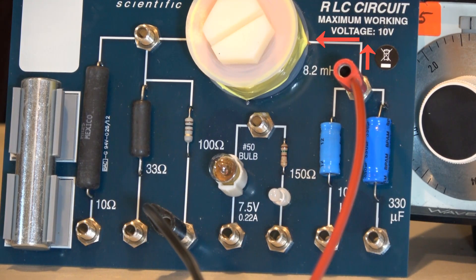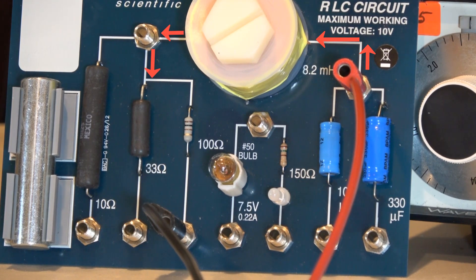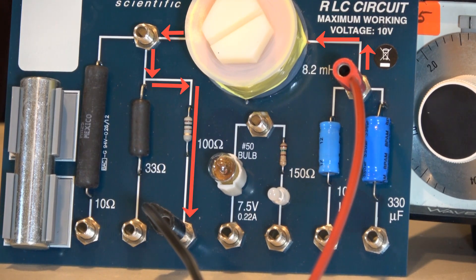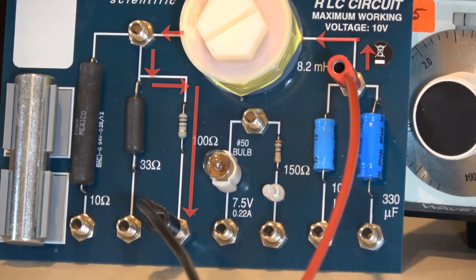The current comes from the red wire, follows this path through the inductor, through the resistor, and back to the black wire which takes it back to the power supply.